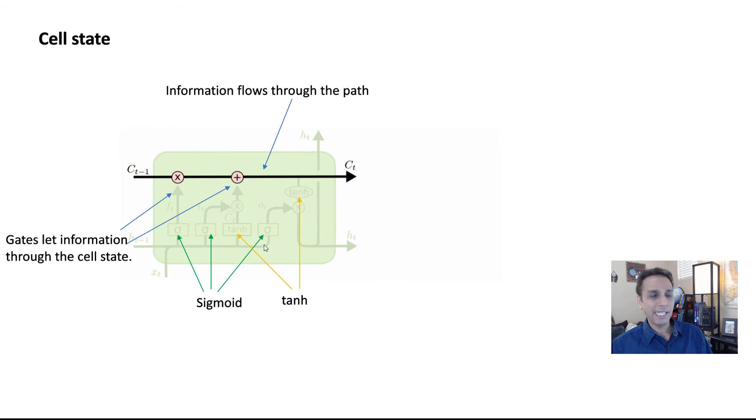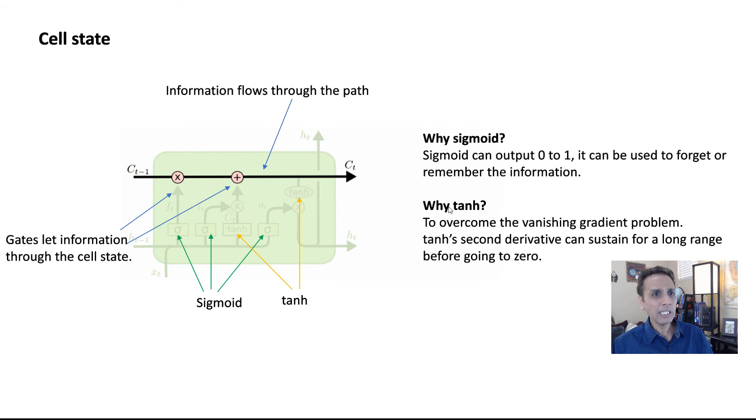And you see these sigmoids and the tanh. And if you ask why sigmoid and why tanh, then the answer is the sigmoid is outputting a value between 0 to 1. Sigmoid is like this S curve. And the output is 0 to 1, and it can be used to forget or remember information. 0, completely forget. 1, just let everything through. So that's why sigmoid is great. And tanh goes from minus 1 to 1, and it's a great function to actually add weight to individual values. But it's there to overcome the vanishing gradient problem. Again, if you look at sigmoid, the second derivative does not sustain, but if you look at the tanh, the second derivative still sustains for a long range before going to 0, even for second derivative.